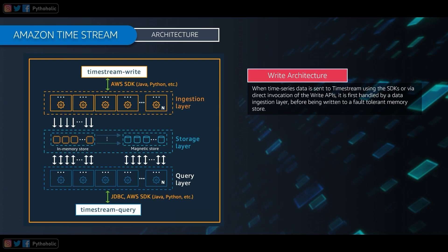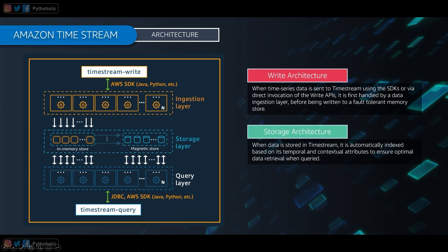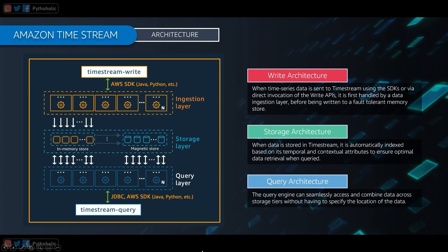The incoming data is processed at the in-memory store, which cleans up the data by removing duplicates, and then replicates it across three availability zones. In the storage layer, the most important component is magnetic storage, which stores your data based on the data retention policy, optimized for read queries so data can be retrieved at a faster rate. When data is pushed to Timestream, it is automatically indexed based on its attributes to ensure best-performance data retrieval when queried.